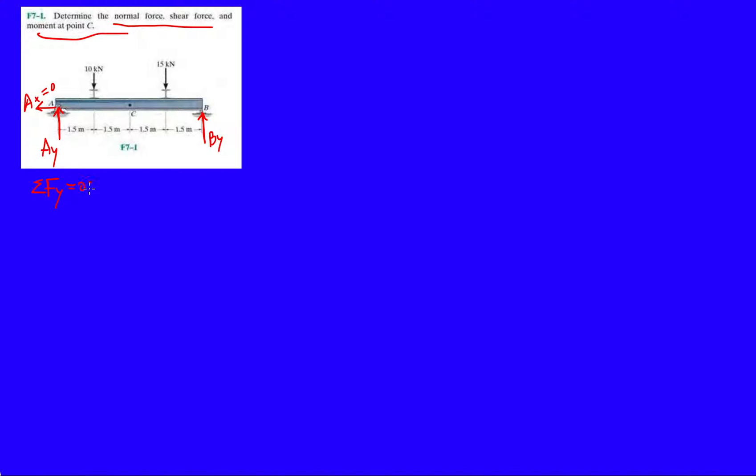Okay, so let's just do the very first few things. So FY equals 0. I have AY plus BY minus 10 minus 15. If this was 15, then you know it's symmetric, so you know that each one would hold 15. But because it's not, then you kind of have to do this. So we know AY plus BY is equal to 25 kilonewtons.